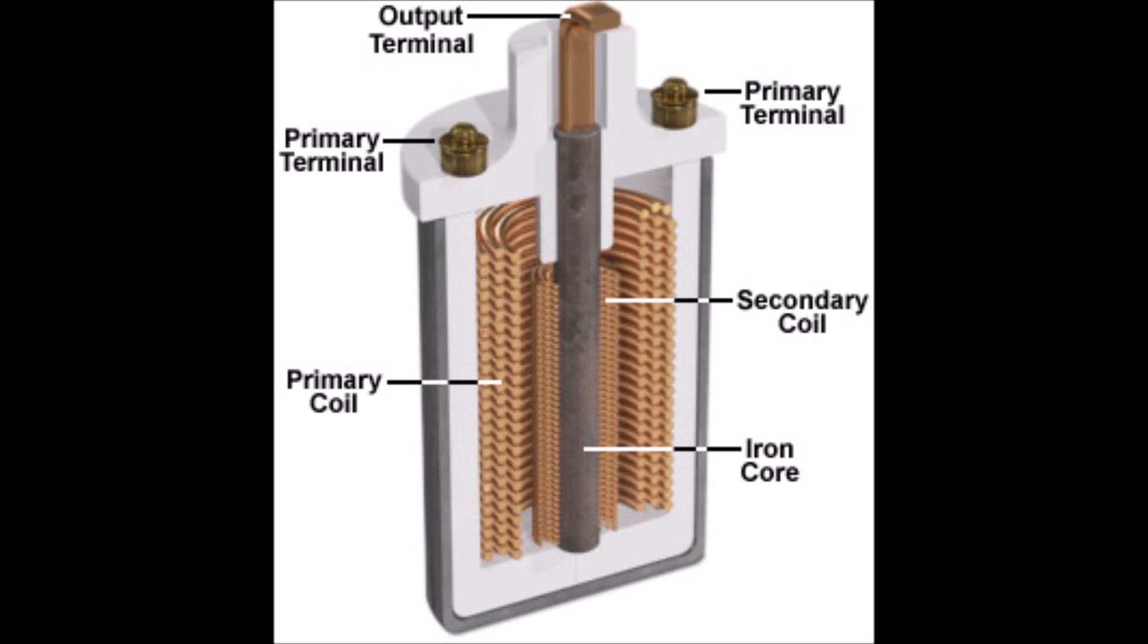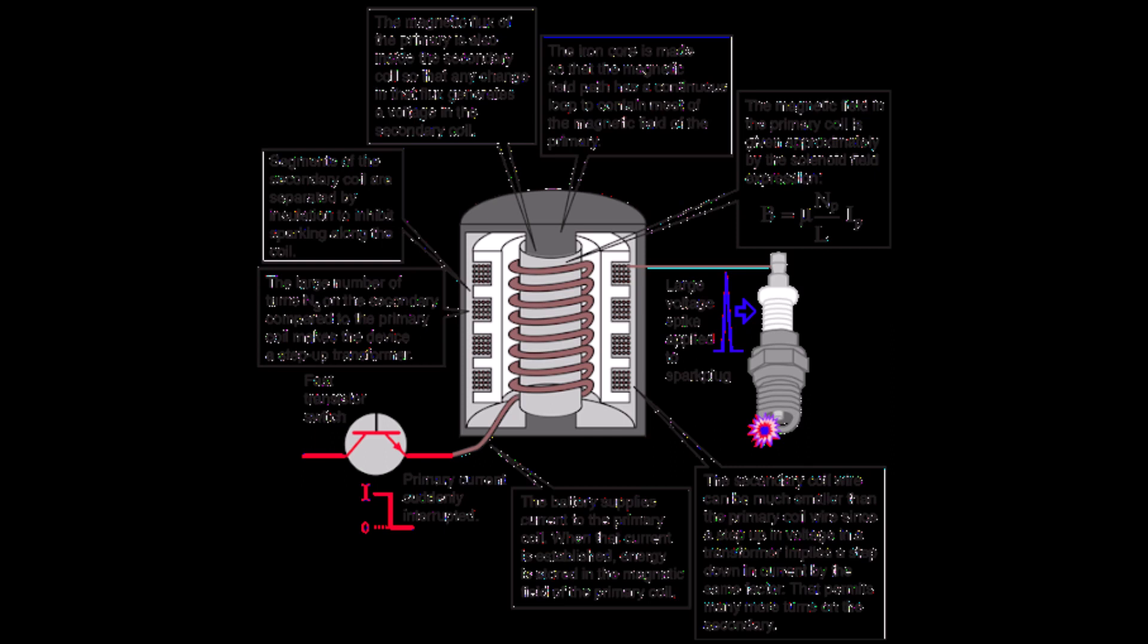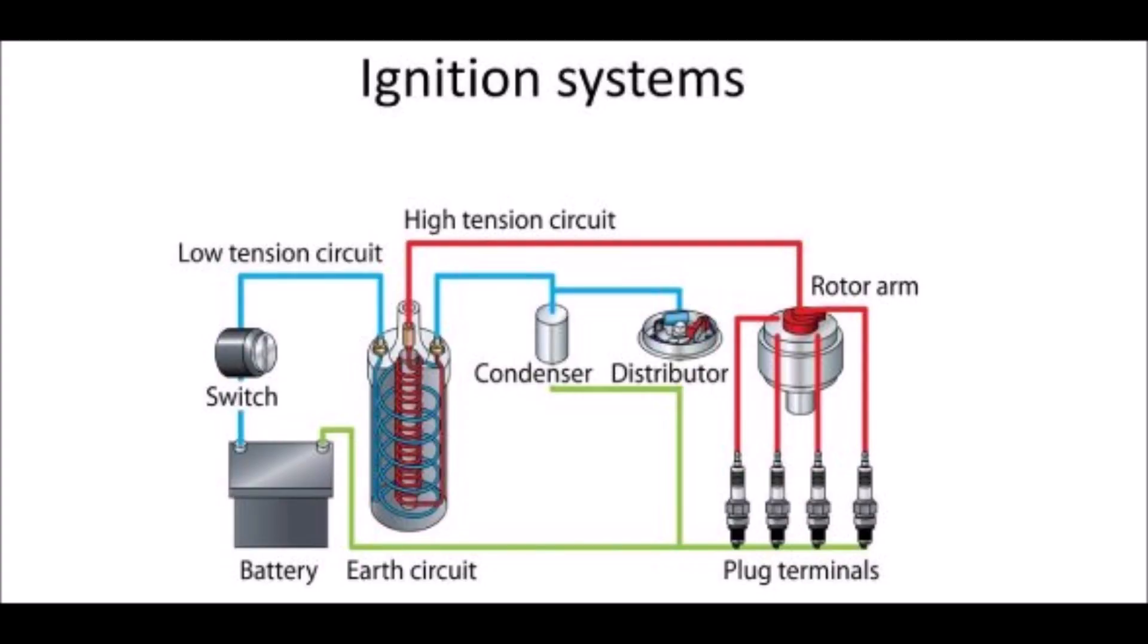Little disclaimer here, even if your coil tests properly with these ohmmeter tests, it can still be bad or intermittent when it's cold or hot. These are just basic tests to see if the coil is within the specifications. The specifications are the primary should be 5 to 6 ohms and the secondary should be 11,000 to 15,000 ohms, and that's what we're going to be measuring here with this ohmmeter.